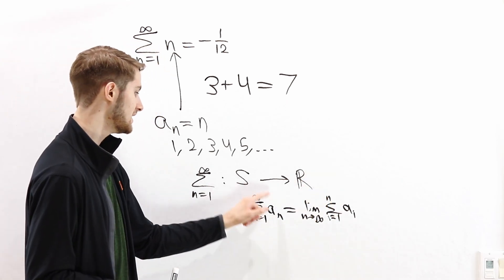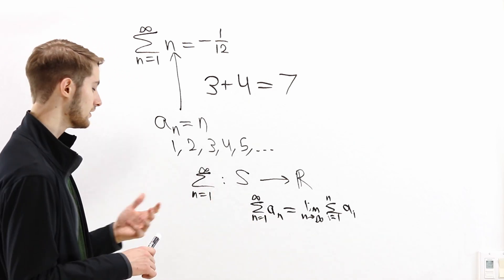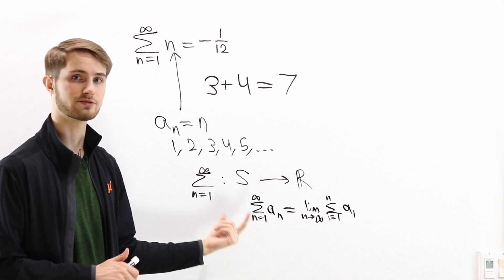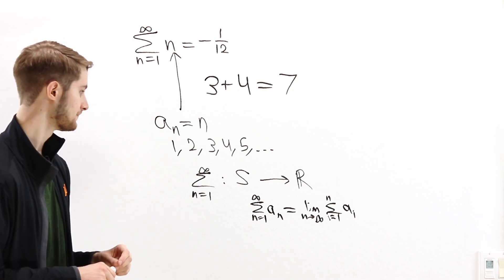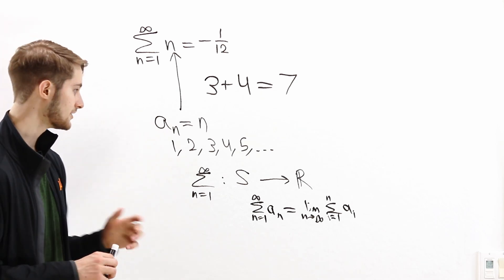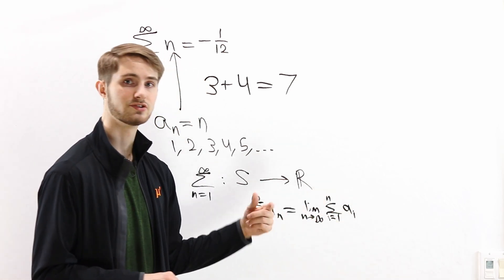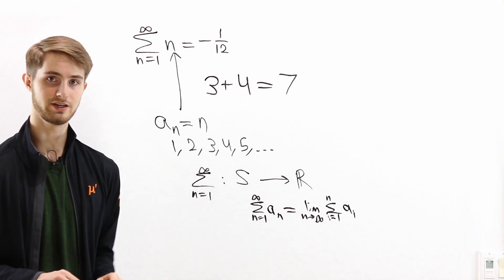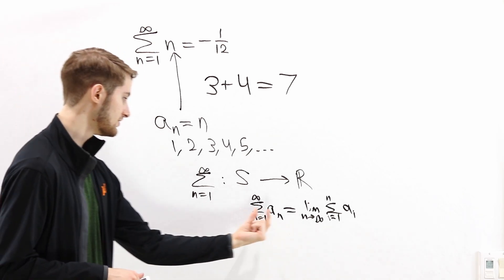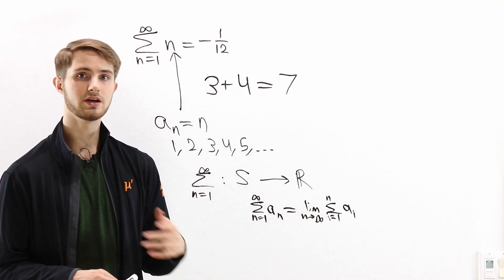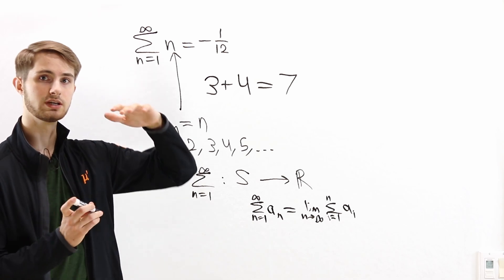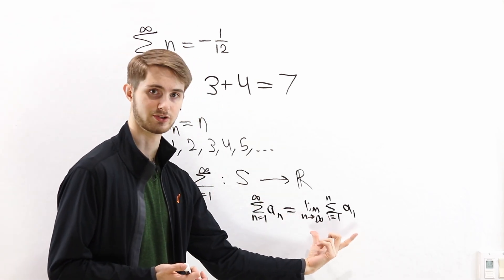But this is not the only infinite sum function that we could choose. There are a lot of other infinite sum functions that people use, and if you take some sequence as an input and apply two different infinite sum functions, you can get two different answers. Usually these functions are chosen so they give the same limit answer on sums that converge under the usual definition. An example is Abel summation — for sequences where the limit of partial sums exists, Abel summation gives the same answer as the standard definition, but it also gives answers for sums that don't have a limit of partial sums.